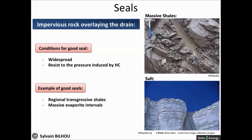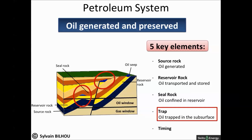In the absence of such geological objects, the fate of the hydrocarbons would be to be dispersed towards the surface, where biological and chemical processes can destroy them. To prevent the oil from reaching the surface, a seal needs to be combined with a trap. A trap forms when the buoyancy forces driving the upward migration of hydrocarbon through permeable rock cannot overcome the capillary forces of a sealing medium.